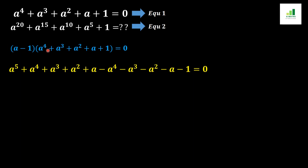Here is the term-by-term expansion: a times a to the power 4 gives a to the power 5; a times a cubed gives a to the power 4; a times a squared gives a cubed; a times a gives a squared; a times 1 gives a. Then minus 1 times a to the power 4 gives minus a to the power 4; minus 1 times a cubed gives minus a cubed; minus 1 times a squared gives minus a squared; minus 1 times a gives minus a; and minus 1 times 1 gives minus 1.